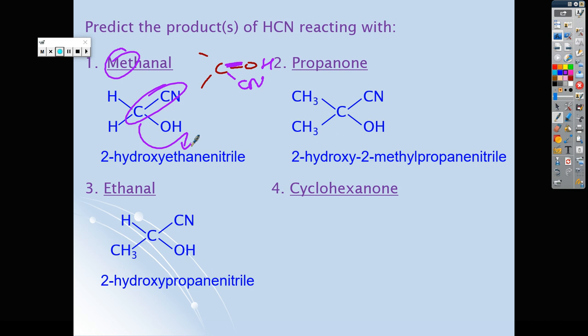We have propanone, so we start off with propanone. Again, we break the double bond, that goes there, then we have our nitrile here. This time our longest chain is three, so we still have a propanenitrile, but we also have to account for the extra carbon as a methyl group.